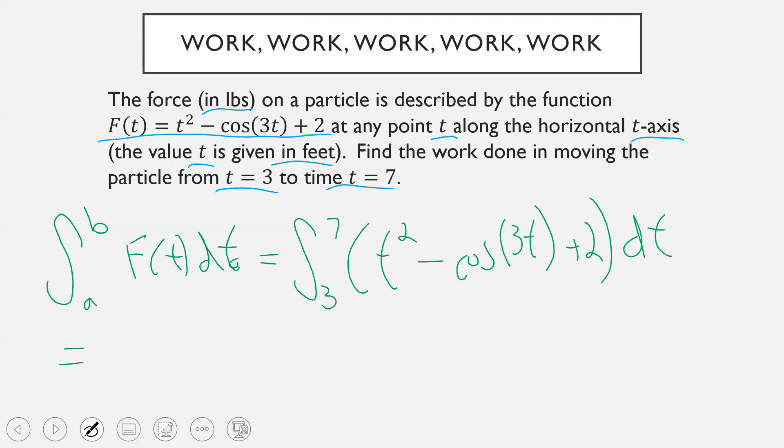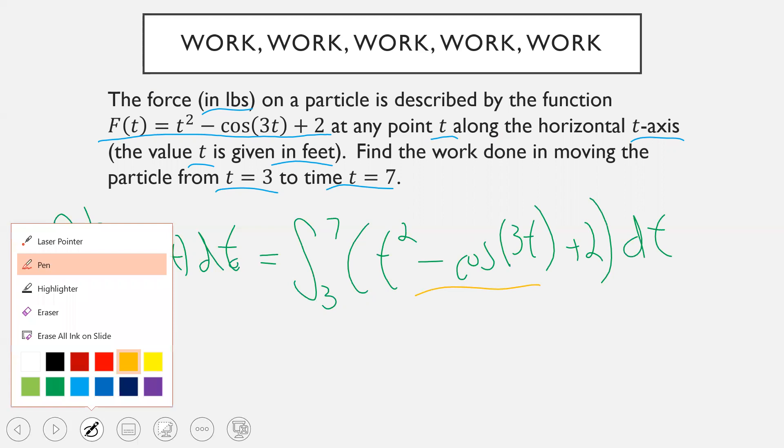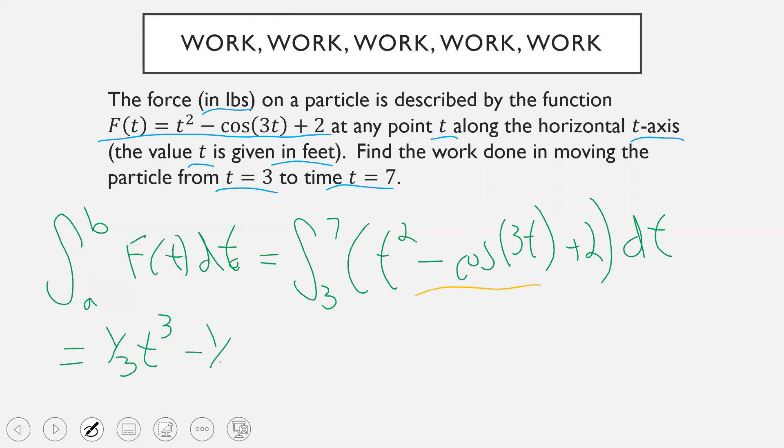Take the antiderivative here to evaluate this. This would become one-third T cubed. You could use U substitution to do the integral or find the antiderivative of the middle function here. I'm going to skip a few steps and just show us that that becomes minus one-third times sine of 3T. And then the antiderivative of the 2 there at the end would be plus 2T. We'll evaluate that over our limits of integration, which are 3 to 7. And I'll let you plug that in the calculator, and it looks like we end up getting 113.1918 as the amount of work done in moving this particle along the T-axis.